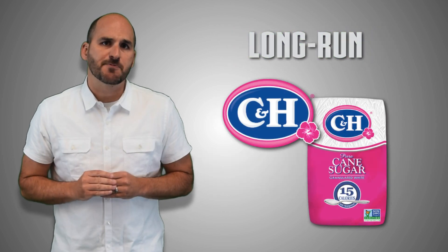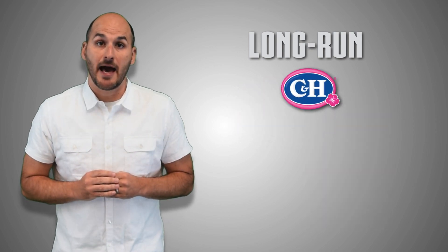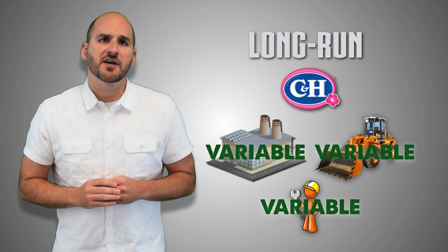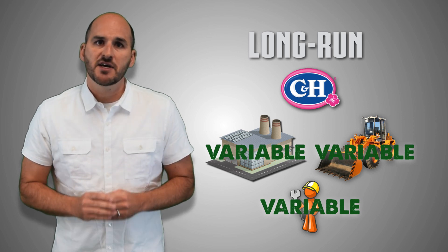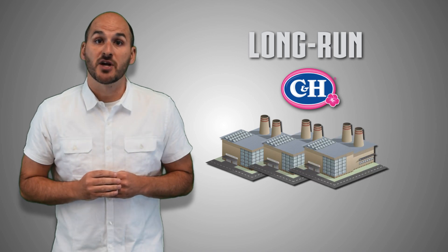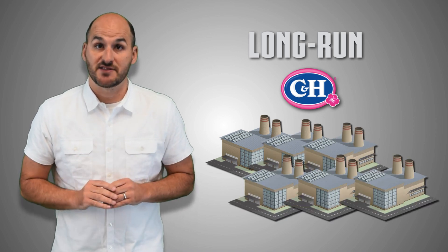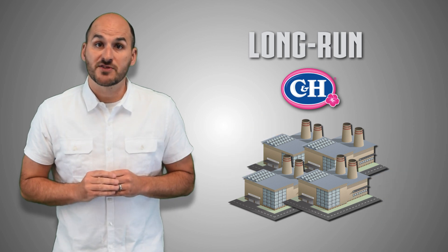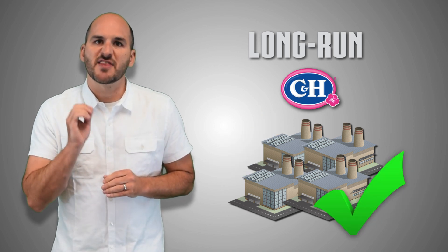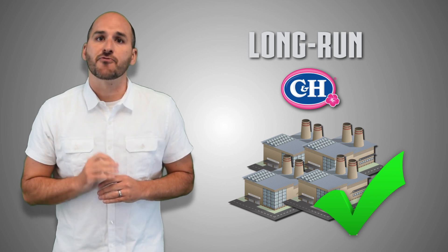Suppose CNH produces sugar in the long-run. Because the quantities of land, labor, and capital available to CNH are variable and can change, CNH can compare different plant capacities to find their optimal rate of production. Fewer plants may mean a rate of production that is too slow; many plants may mean a rate of production that is too fast. The firm can use variable resources to fine-tune their plant capacity to find the optimal rate of production where they can use all their available resources to their full efficiency.